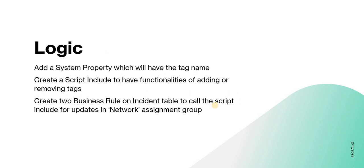The logic behind this requirement: we will create a system property which will have the tag name. When I give you this code you can download the XML or update set and just change the system property if you want to refer to another assignment group. Then we will create a script include with functions for adding or removing tags, and finally we will have two business rules on the incident table which call these script includes — one when a network group is added and one when the network group is removed.